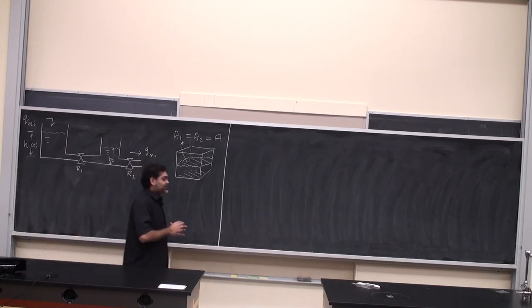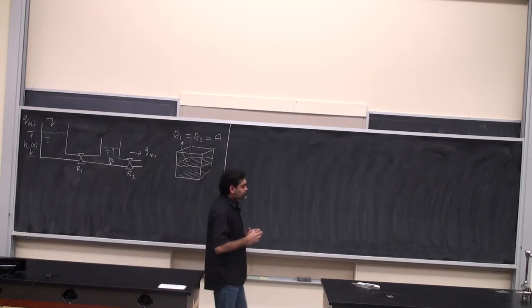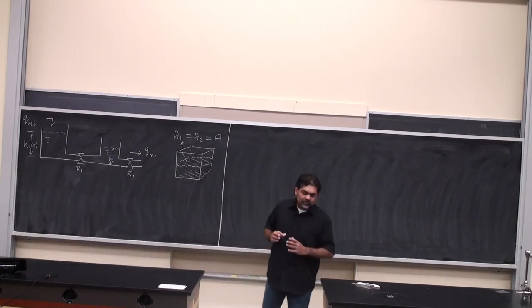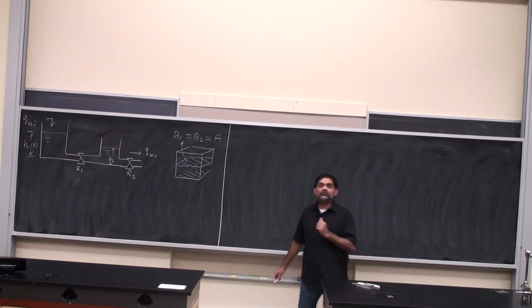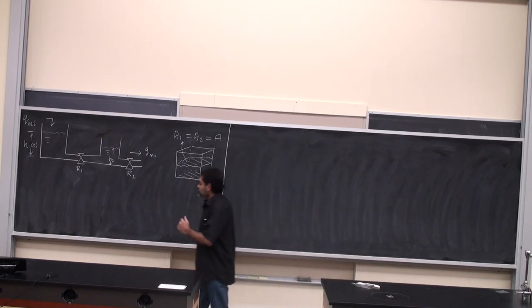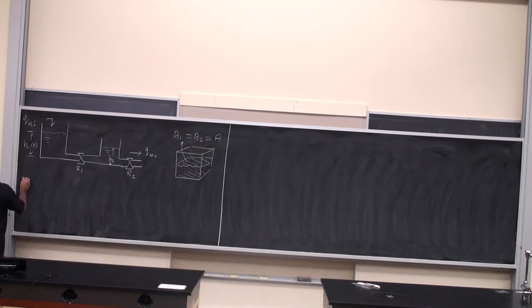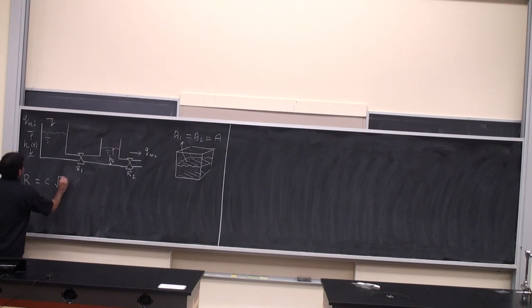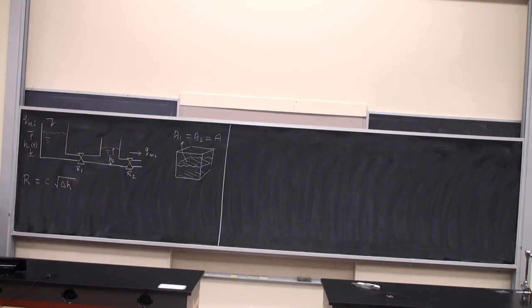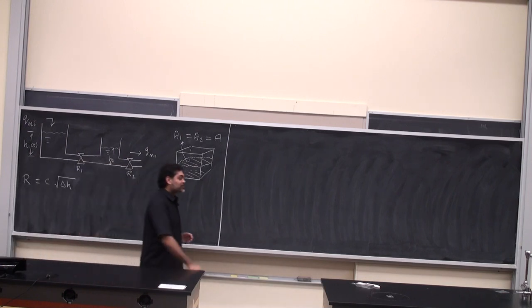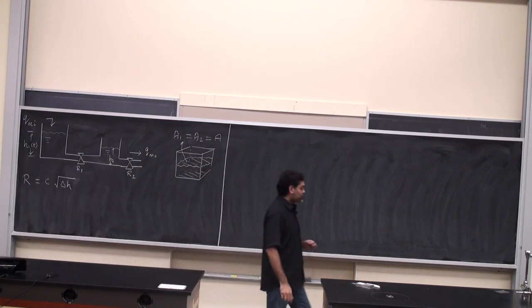The area of the tanks we're going to assume to be the same. So area A1 is equal to A2, equal to A. This area along the third dimension is a constant. And let's say that the resistance is proportional to the square root of the height difference, so R is some constant C times square root of delta H.